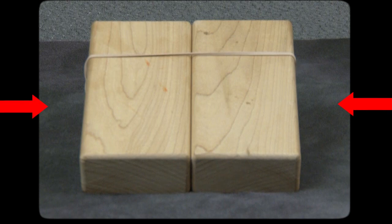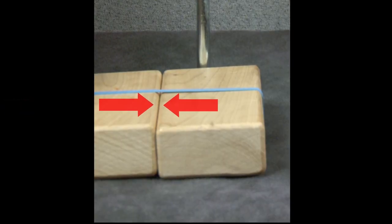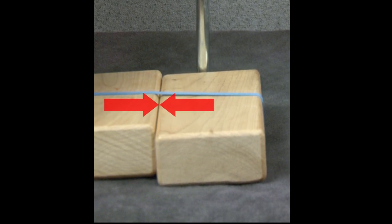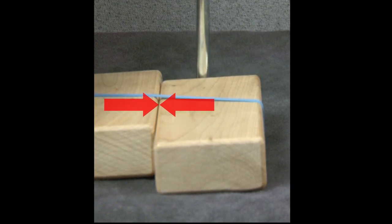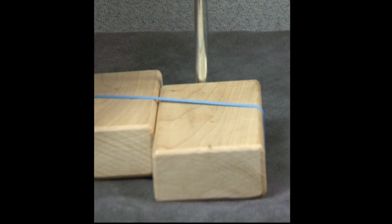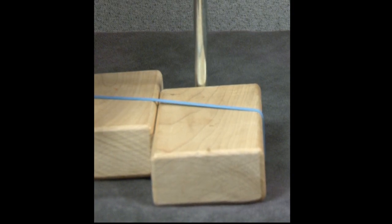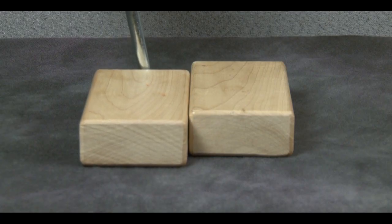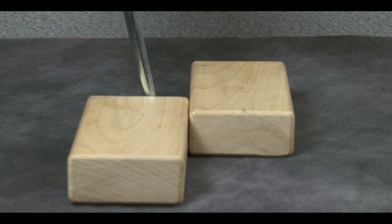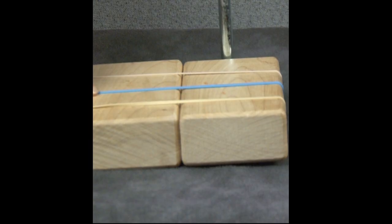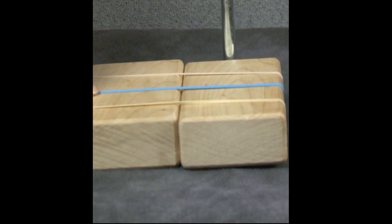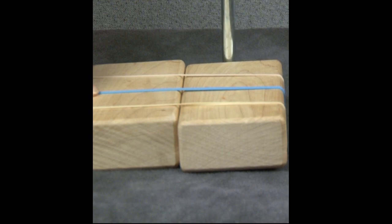The effect is a compressive stress across a surface connecting the blocks. This compressive stress increases the resistance to sliding between these blocks, the resistance now being several times larger than what it would be without the post-tensioning effect provided by the elastic bands. The larger the number of elastic bands, the greater the post-tensioning force and resistance to sliding.